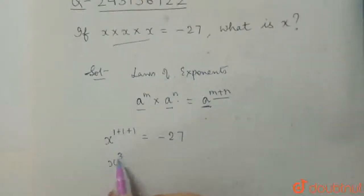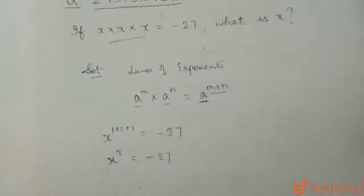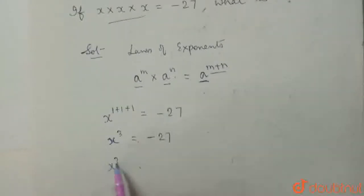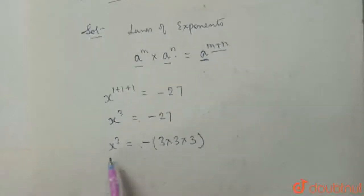so x cube is equal to minus 27. So now x cube is equal to minus of 3 into 3 into 3 and now we know that x cube,